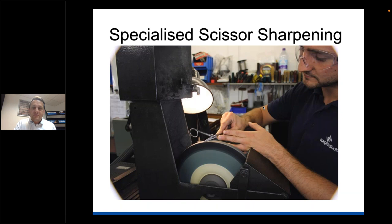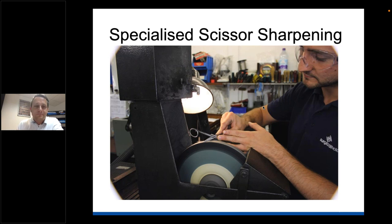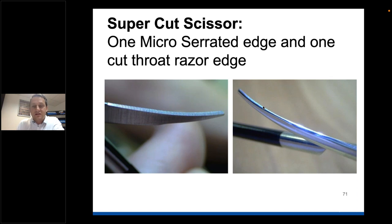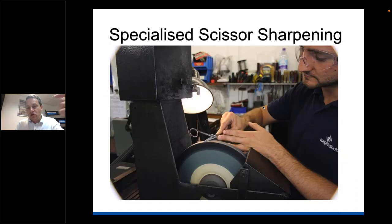We have many different specialized sharpening wheels for surgical instruments - this one is specifically for scissors. For supercut scissors, there is a specific grinding wheel because they have a particular edge. A supercut scissor has one serrated edge and one ultra-sharp razor edge - the serrated edge grips the tissue while the sharp edge cuts it. To maintain that, you need particular wheels to sharpen them on.